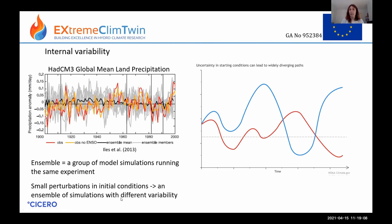This can be illustrated schematically: two starting points that are very close but not quite the same — representing climate model simulations — are initially fairly similar but then diverge rapidly, ending up totally different. If the starting state had been exactly the same, they would have followed exactly the same trajectory.